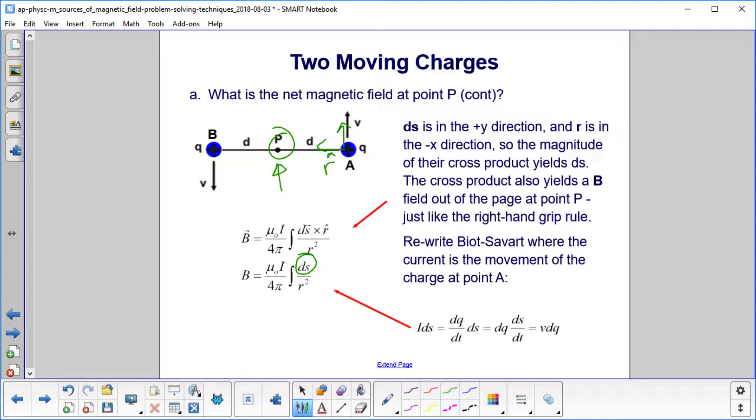We're now going to rewrite Biot-Savart. We're going to look at the term I dS. We're going to do a little rearrangement. Another name for I, of course, is dQ dt.